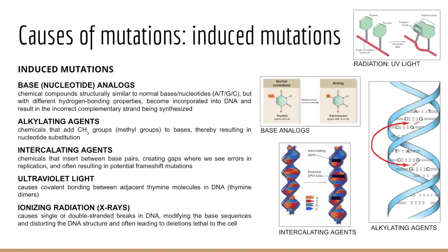Intercalating agents are chemical substances with a similar shape and dimension to a purine-pyrimidine pair, allowing them to wedge or sandwich themselves between the base pairs of DNA. This distorts the three-dimensional structure of the DNA helix, causes single nucleotide insertions and deletions during replication, and may affect both DNA replication and transcription — ultimately leading to frame-shift mutations.